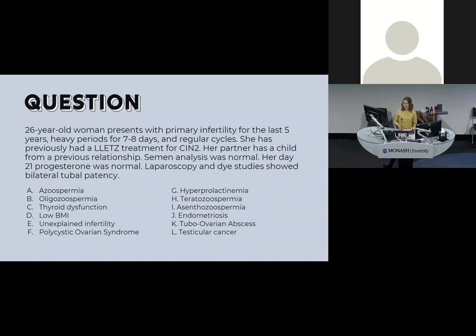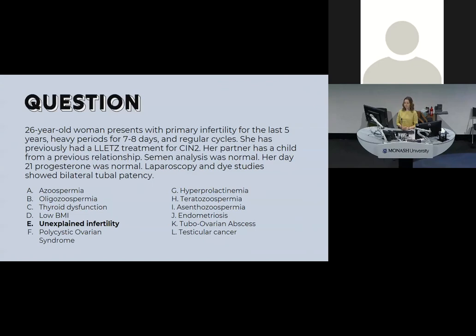Another case: infertility for five years, heavy but regular periods, previous LLETZ excision on the cervix, partner has a child from a previous relationship, semen analysis normal, day 21 progesterone normal, laparoscopy and dye studies show normal patent tubes. The answer here is unexplained infertility. Don't fear that answer — as we said, about 30% of people have no identifiable cause.